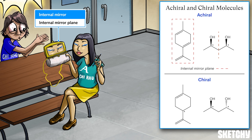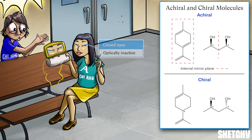When you are looking for internal mirror planes in a structure, be sure you fill in any hydrogen atoms that haven't been drawn in — these can break symmetry. If a molecule is achiral, it's automatically optically inactive, which is why this perfectionist's eyes are closed.